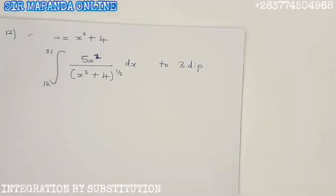We are now on question number 12. This is in line with integration by substitution. This question is carrying 8 marks. We are given u equals x cubed plus 4, and the limits from 12 up to 31. They want you to integrate 5x squared divided by x cubed plus 4 to the power of half. Give your answer to three decimal places.